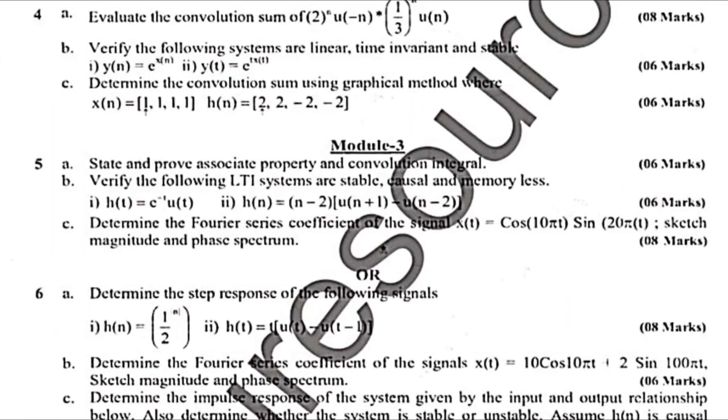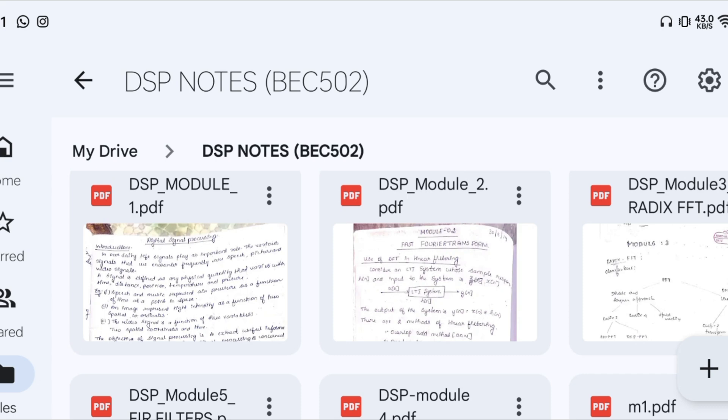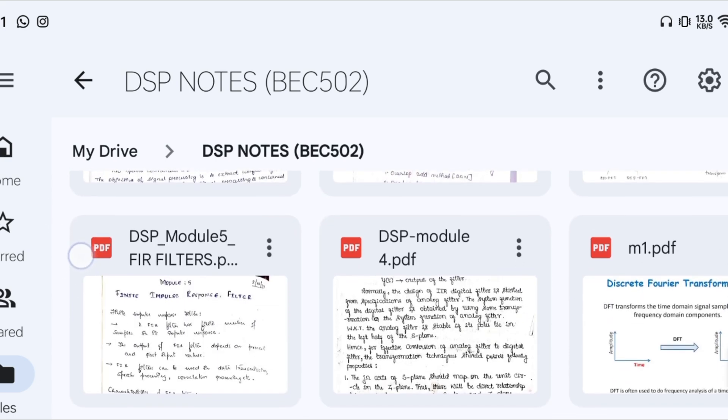Now let me show you the interface of the handwritten notes, which you can go through. I will provide the link in the description box. First, let me show you the interface. This is the DSP module one. This is handwritten note, module two handwritten note, module three handwritten and module four similarly and module five.